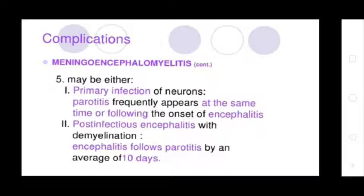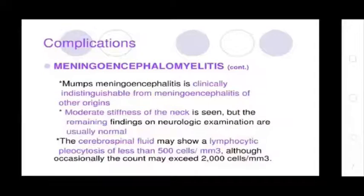Complications of meningoencephalomyelitis may be either primary infection of neurons, with parotitis frequently appearing at the same time as or following onset of encephalomyelitis, or post-infectious encephalomyelitis with demyelination, which follows parotitis by an average of 10 days. Mumps meningoencephalomyelitis is clinically indistinguishable from meningoencephalomyelitis of other origins. Moderate stiffness of the neck may be present, but remaining neurological findings are usually normal. The cerebrospinal fluid may show lymphocytic pleocytosis of fewer than 500 cells, although occasionally the count may exceed 2,000 cells.